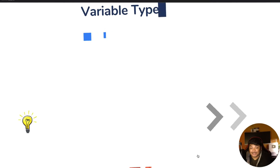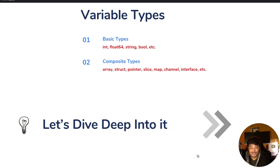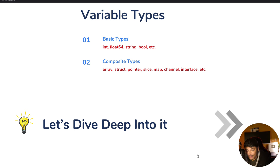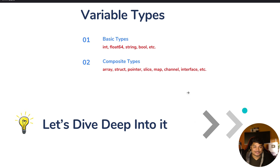Now let's learn about variable types. There are two kinds: basic types and composite types. Under basic types there are integer, float64, string, bool, and others. Under composite types, we have arrays, struct, pointer, slice, map, channel, interface, and so on.